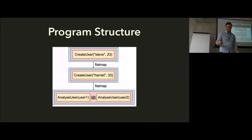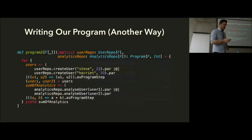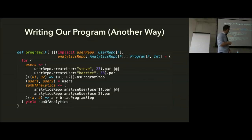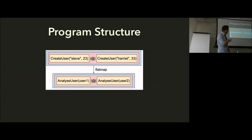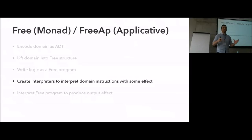The program structure ends up looking like this: create-user is a single operation, then we flat-map it using the for-comprehension to enforce that one runs after the other, then create user Harriet, and finally put the two analyze-user steps in a single free-applicative step inside the free monad. We can write the exact same program with different parallelism semantics without changing any domain code — all we've done is call dot-par instead of dot-seq. The key point is these are all just data structures; we haven't done anything yet.